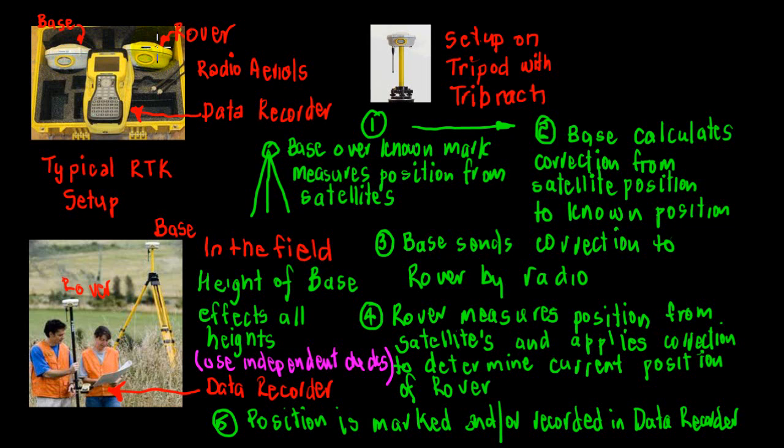Usually in the box it's a good idea to write base on one and rover on the other and to always put them in the same place back in the box. We have the data recorder. This is where all of the information that we measure in the field is held so that we can take that back to the office and download our information. Here we have a couple of little radio aerials. These go on the base and the rover and enable them to communicate by radio.